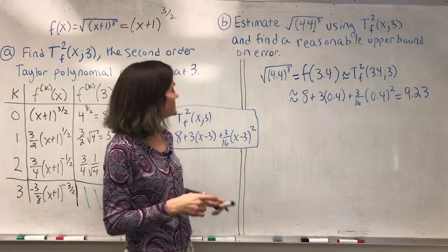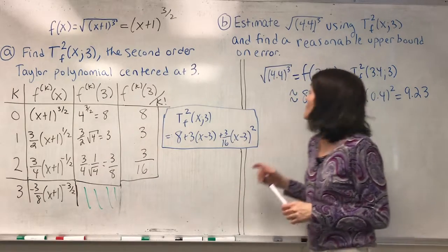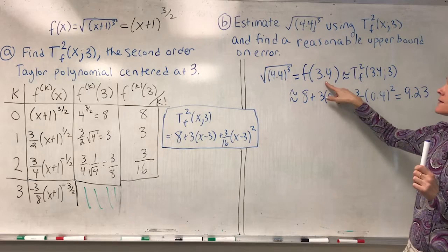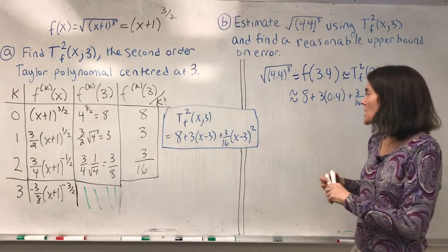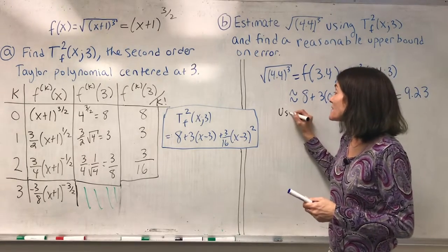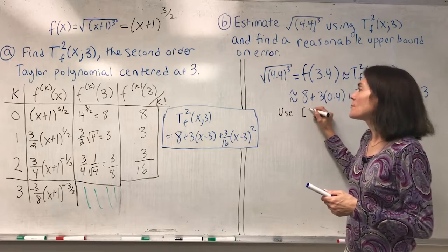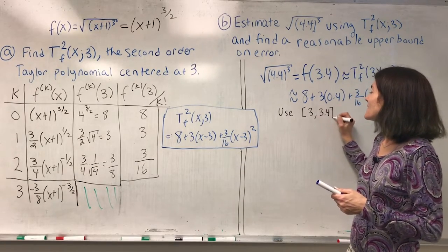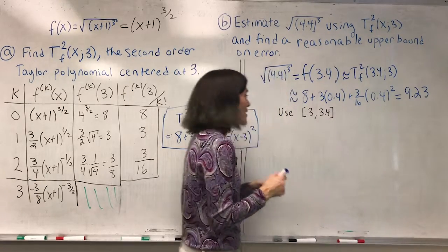Well, my center is 3. I'm using the polynomial at 3.4. So when I'm trying to find a bound for error, I can use the interval between my center and this particular value.